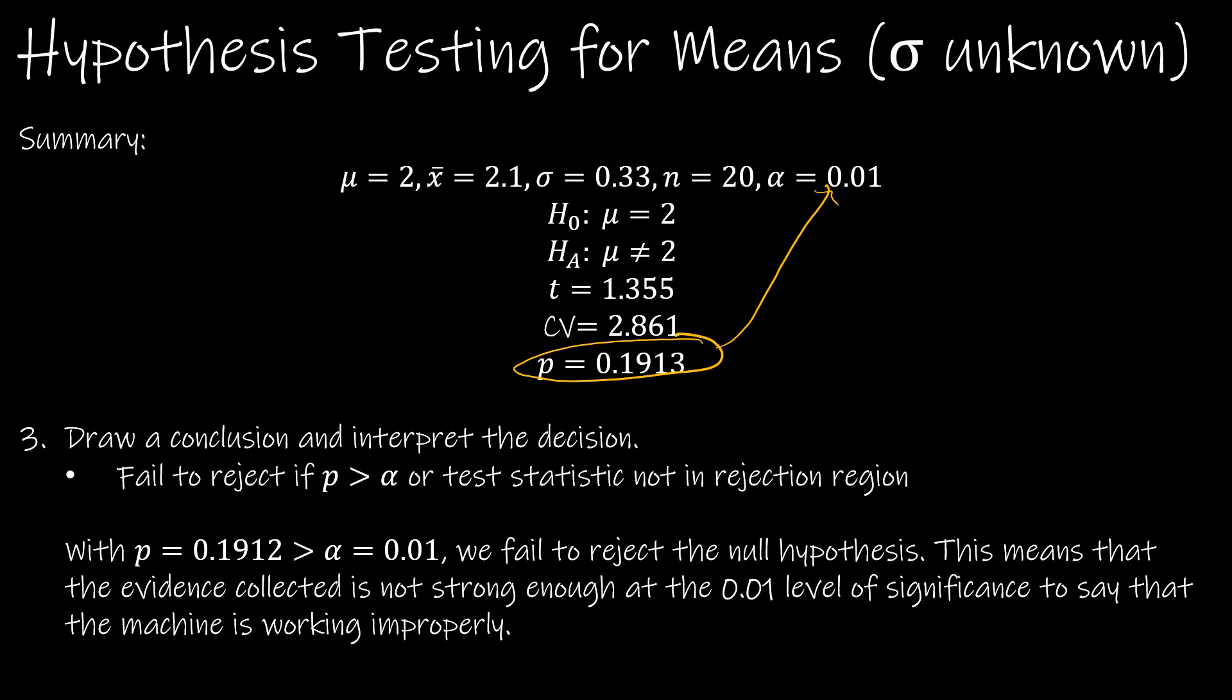This means the evidence collected is not strong enough. We always go back to our alternative. We're saying this is true or this is not true. So if we fail to reject, there's not enough evidence to say the alternative is true.